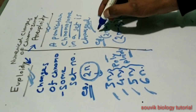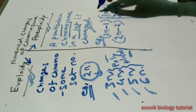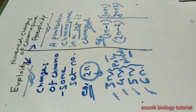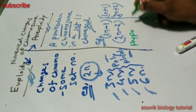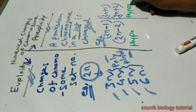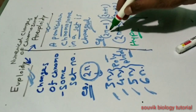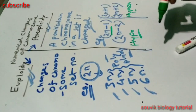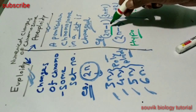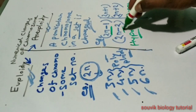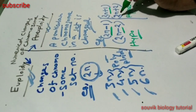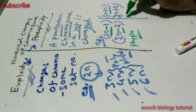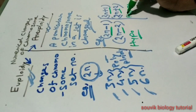This is also known as hypoploidy and hyperploidy, and it is included in aneuploidy. 2n minus 1 is known as monosomy; 2n minus 2 is known as nullisomy; 2n plus 1 is known as trisomy; and 2n plus 2 is known as tetrasomy.